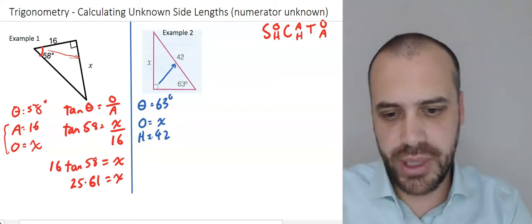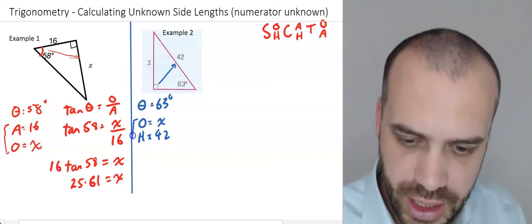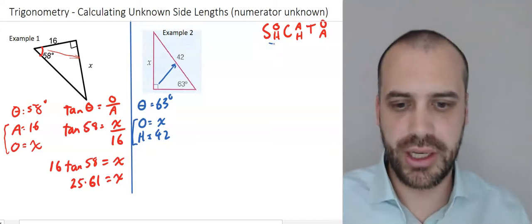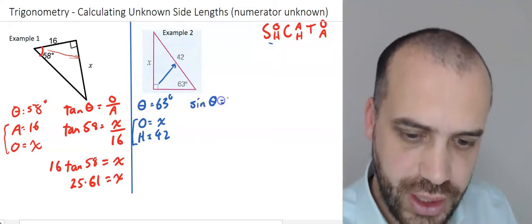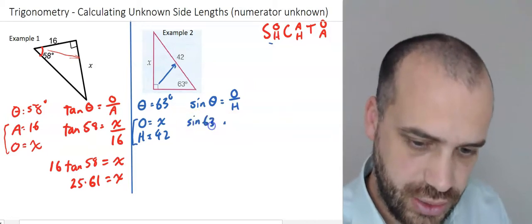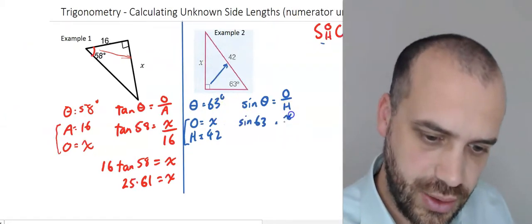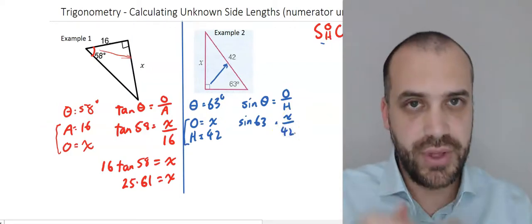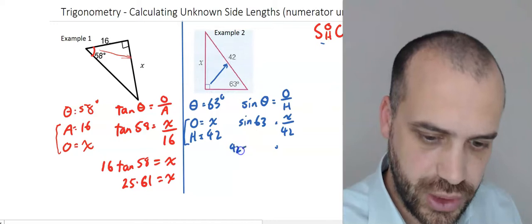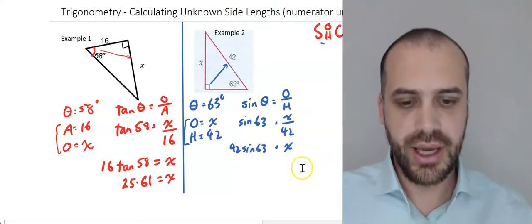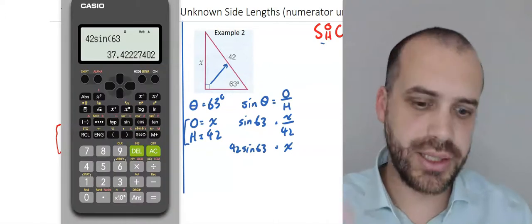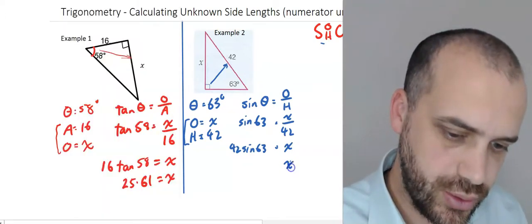In order to solve this triangle, I need a trig ratio that has O and H in it — SOH — so I use sine. Sine θ = opposite over hypotenuse. Putting in my values: sin 63 = x over 42. I have the unknown as the numerator again, so I multiply both sides by 42: x = 42 sin 63. Typing that into the calculator — pressing the sine button this time — gives x = 37.42.